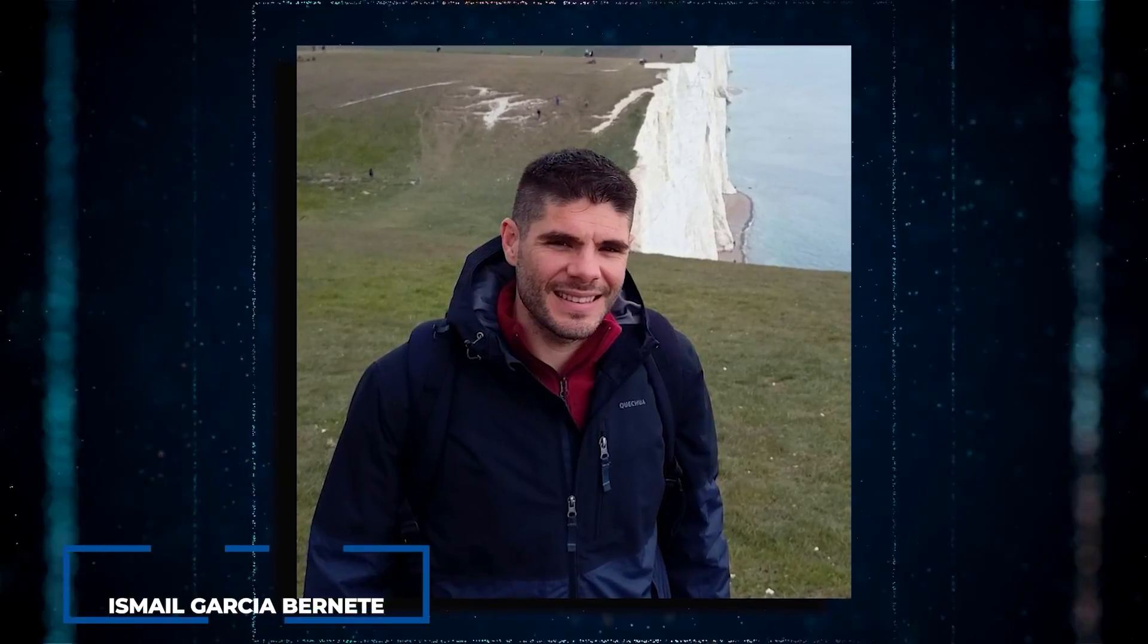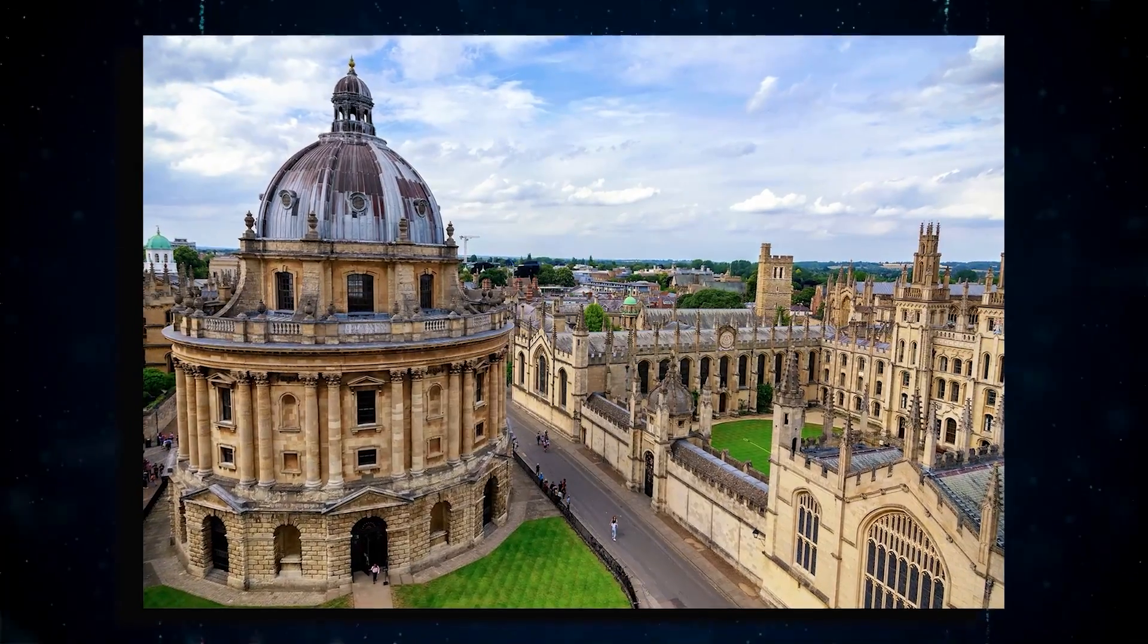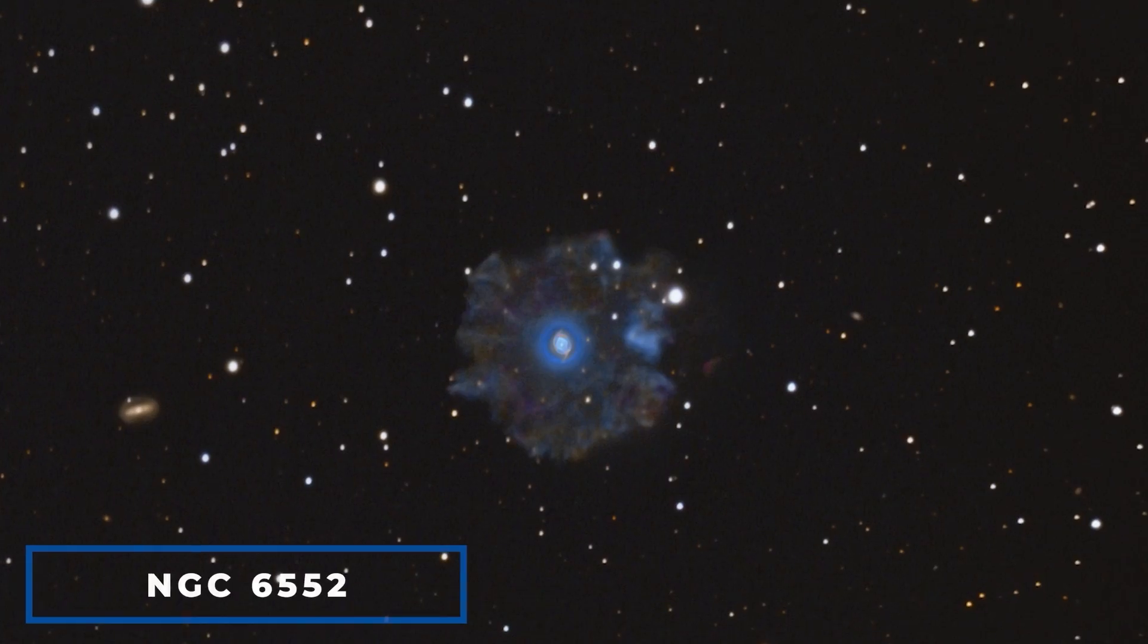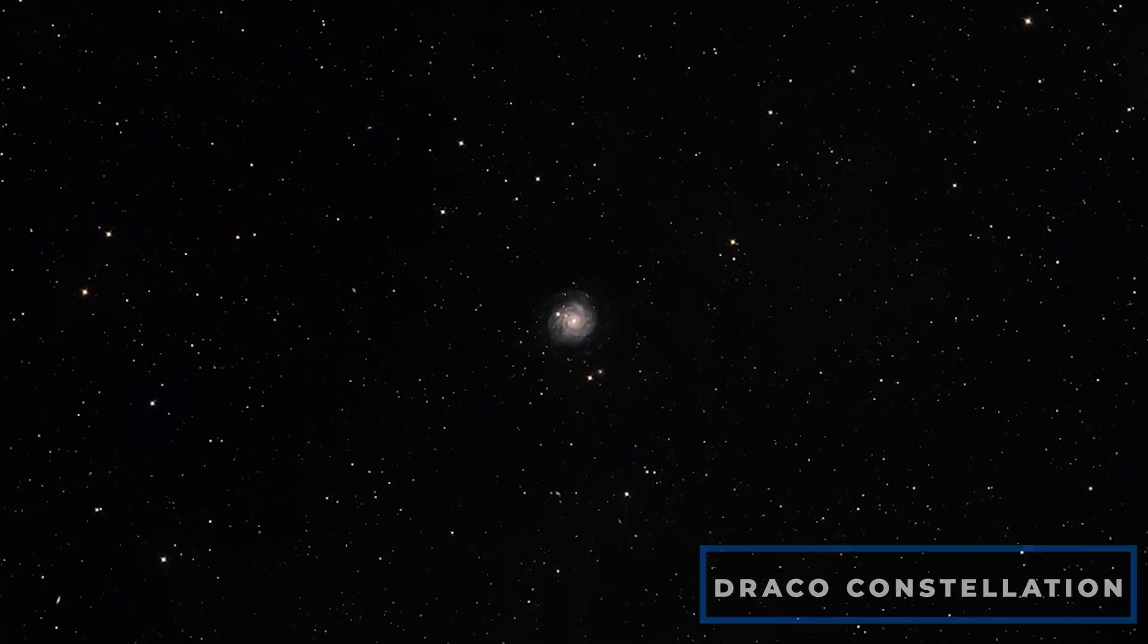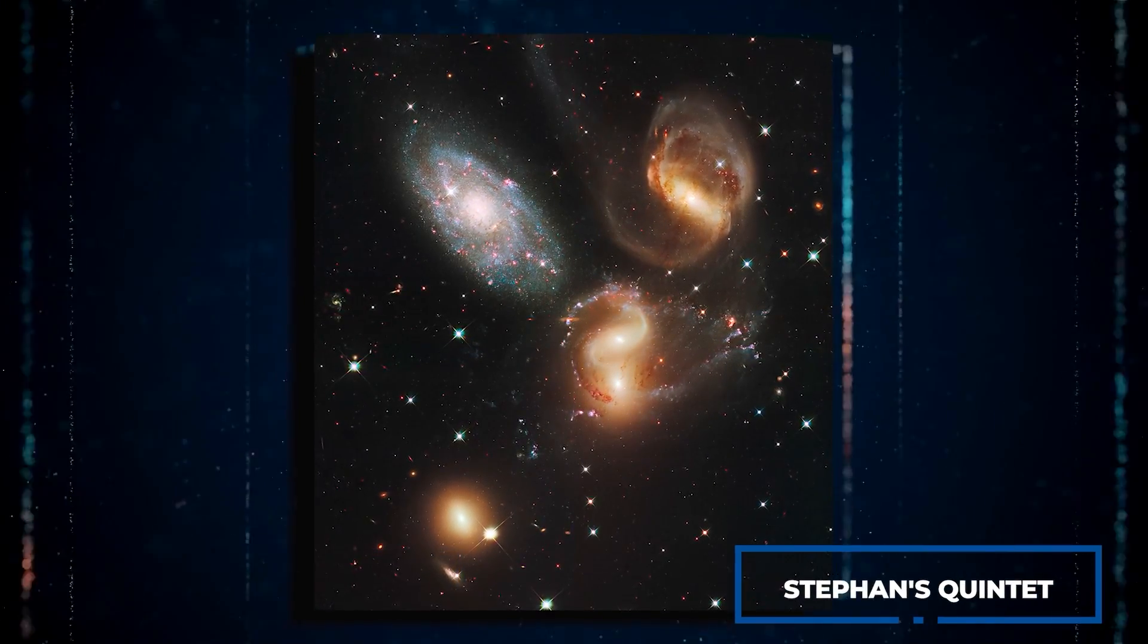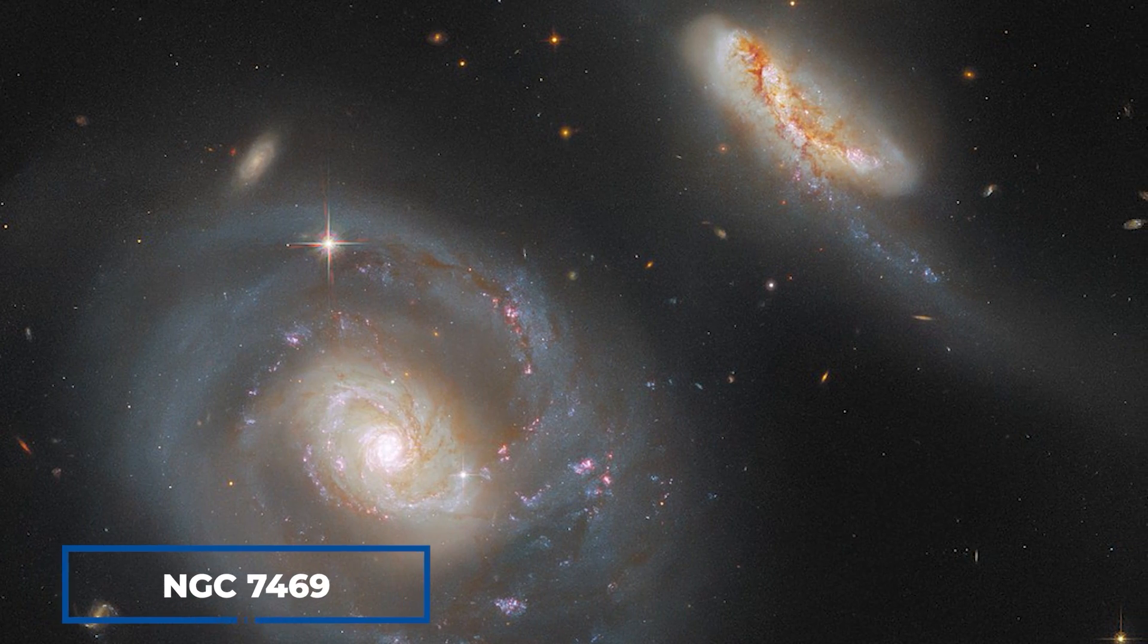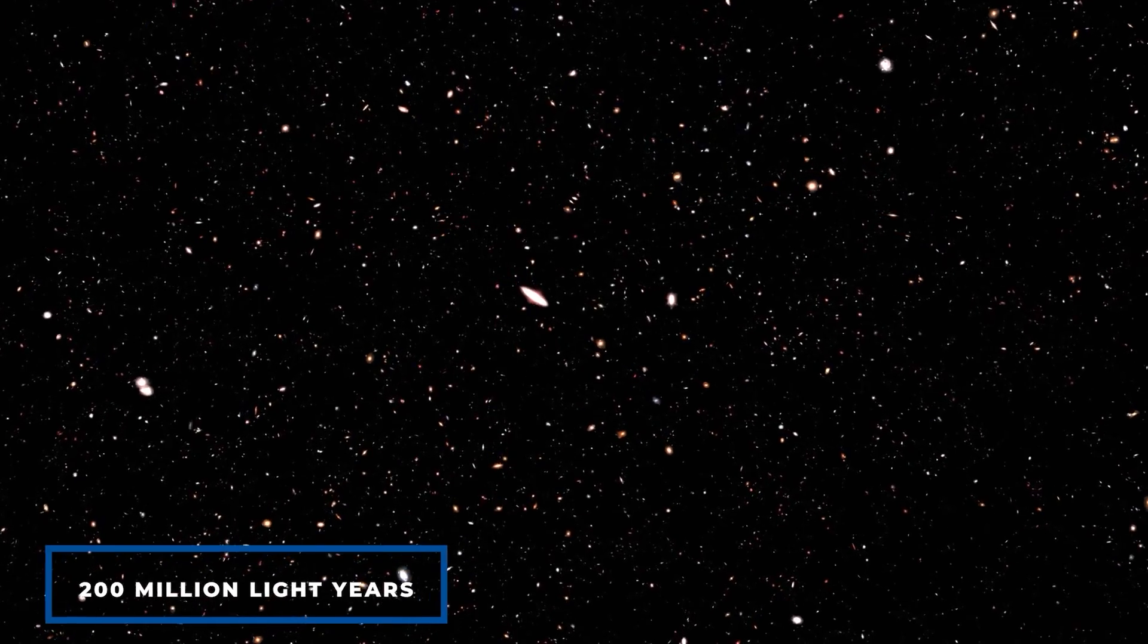Leading the team of astronomers was Ismail Garcia Bernetti, an astrophysicist from Oxford University in the UK. The three galaxies studied by the team were NGC 6552, located 370 million light years away in the Draco constellation, NGC 7319, one of the five galaxies in Stefan's Quintet, located about 311 million light years away in Pegasus, and NGC 7469, also in Pegasus, but at a distance of about 200 million light years.